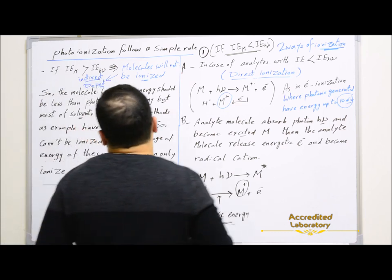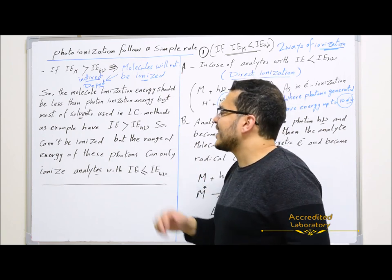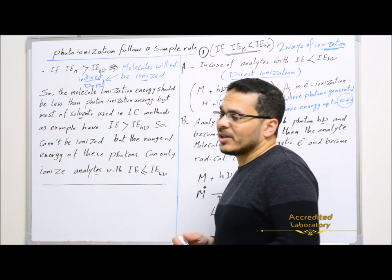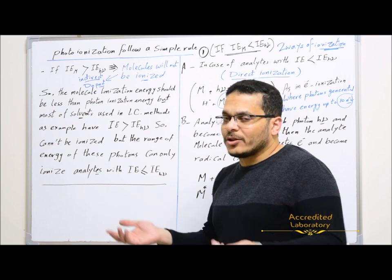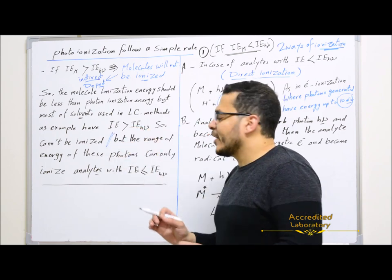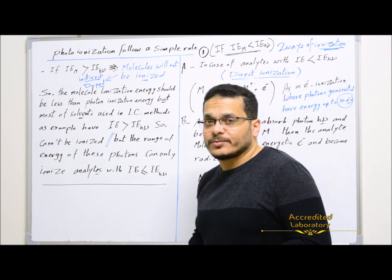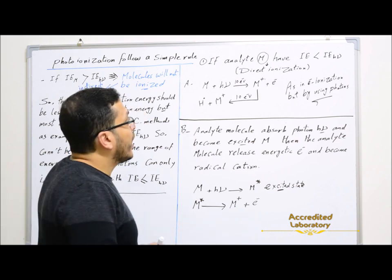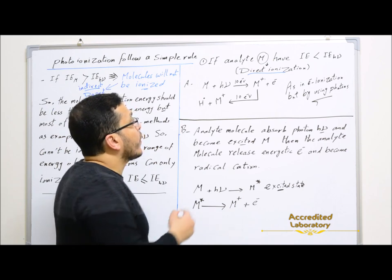The molecule ionization energy should be less than the photon ionization energy. For solvents, most solvents used in LC-MS methods have ionization energy higher than the ionization energy of photons, so they cannot be ionized by the photons. The range of energy of these photons can only ionize analytes with ionization energy lower than the ionization energy of the photons. If the analyte molecules have ionization energy lower than the ionization energy of the photons, there will be no problem and there will be direct ionization — the analyte molecules will be ionized by the photons.